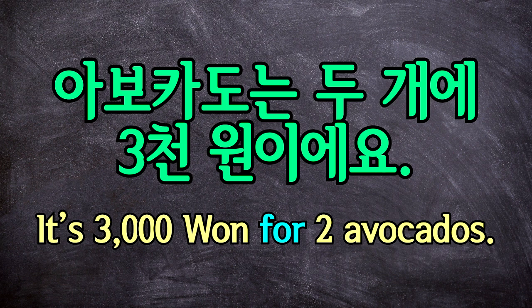It's three thousand won for two avocados. In this sentence, translating it as 'each' or 'per' or 'a' don't really fit, since it's for two avocados. So literally, 'each two avocados,' if it helps to think of it like this.